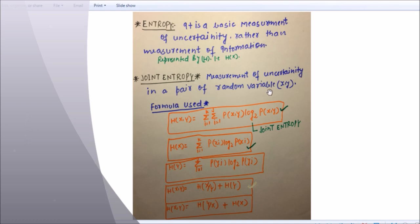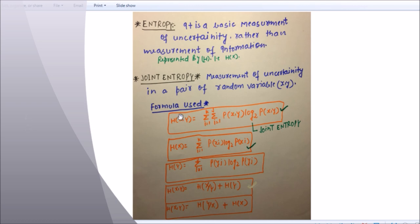Joint entropy is the measurement of uncertainty in a pair of random variables. When we measure the uncertainty between two variables X and Y, we call it joint entropy. The formula used in joint entropy: H(X,Y) is equal to summation of i equals 1 to k and summation of j equals 1 to j, of p(x,y) log base 2 of p(x,y).